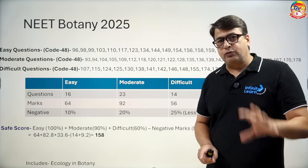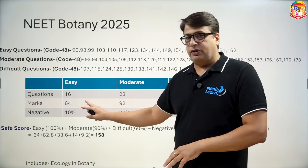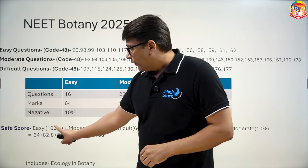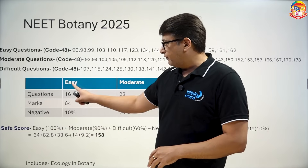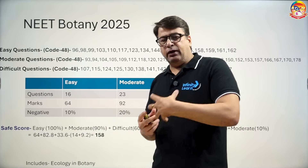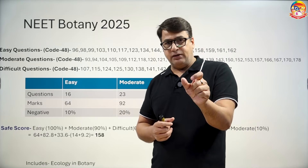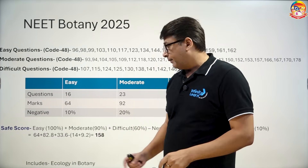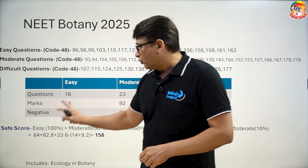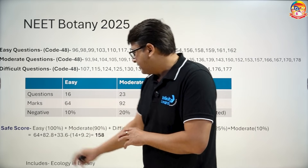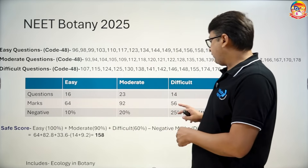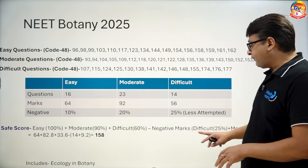Here is how we calculated the scores. In botany and zoology, we assume all easy questions must be solved by all students. For a safe score, easy questions will be solved 100%, so there is no negative marking in easy. That means you have to score 64 out of 64 in easy. For moderate, there is a possibility of a 10% error, so you have to solve 90% accurately. 90% of 92 comes to 82.8, so from moderate the student can score 82.8. For difficult, we have calculated 60% — 60% of 56 marks is 33.6.